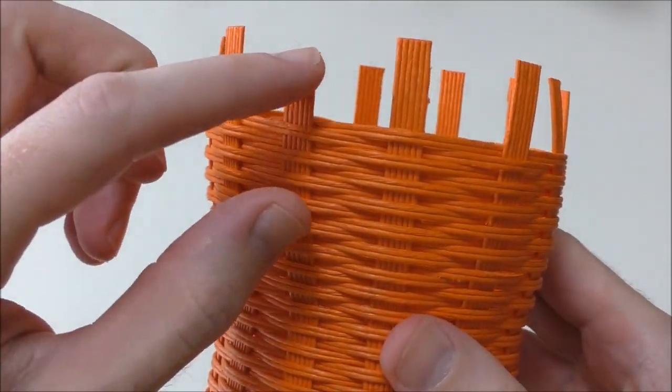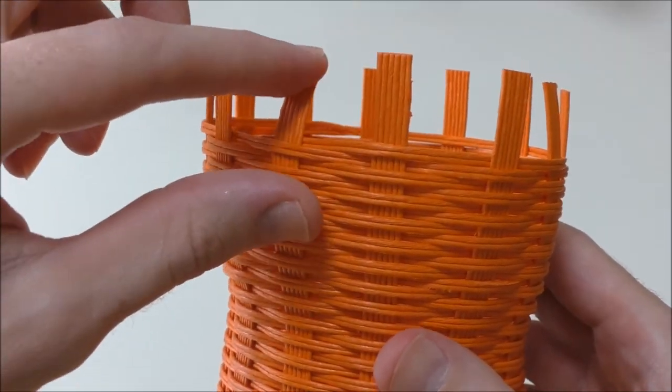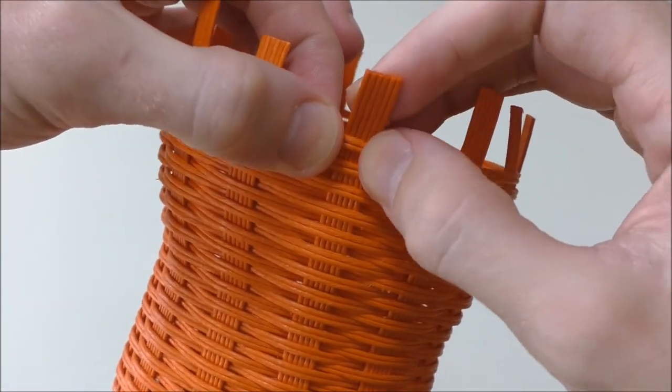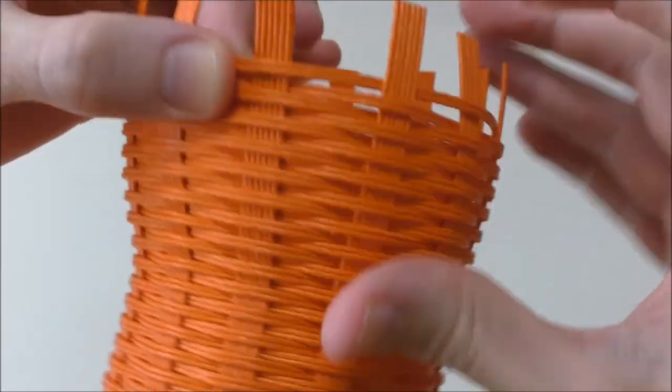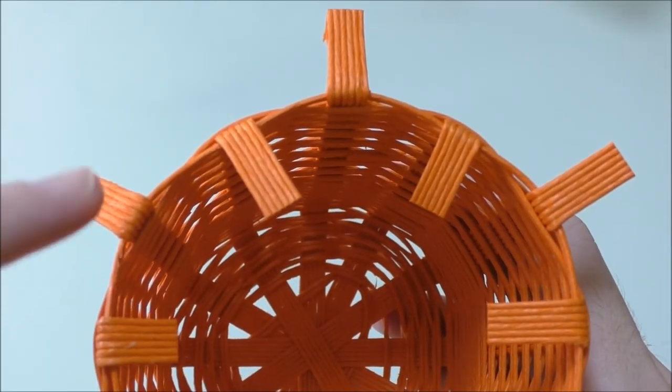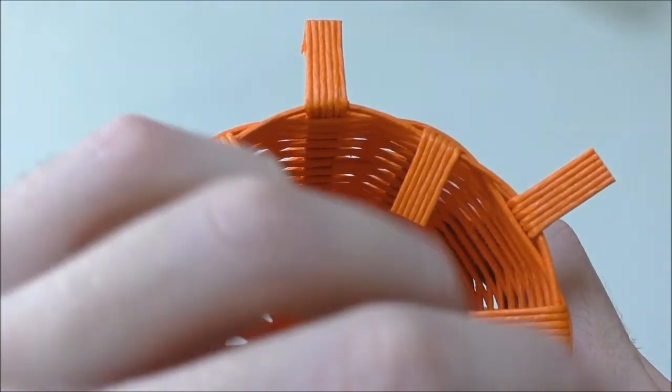Once the glue has dried on the basket all we need to do is to fold over these top pieces so they cover the top layer of weaving. So this one will come out and this one will go in, out, in, out, in. And they alternate to give this sort of pattern where you have in, out, in, out, in, out, in, etc.